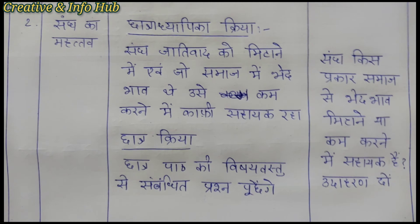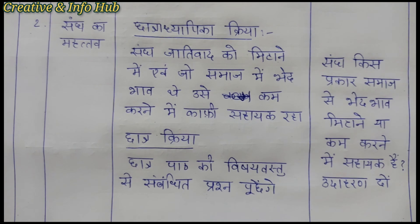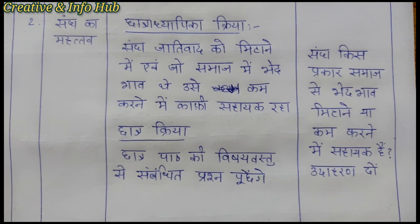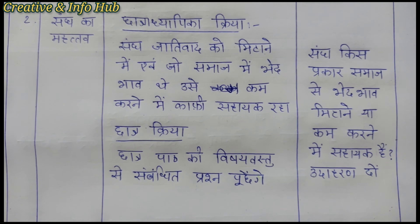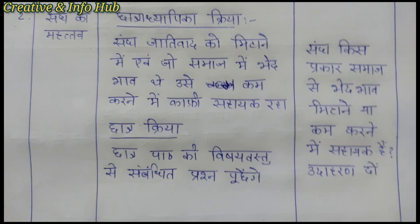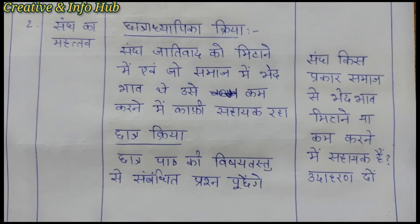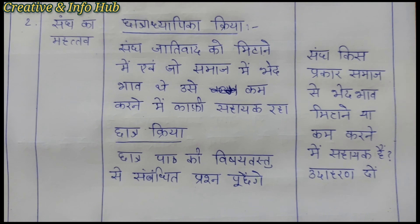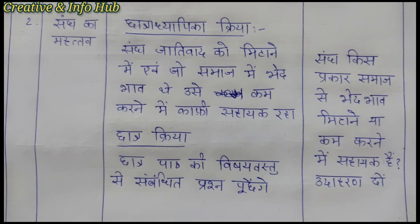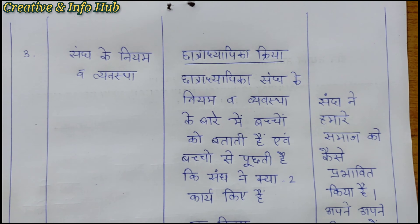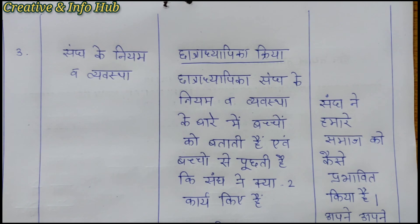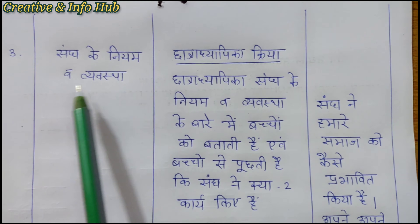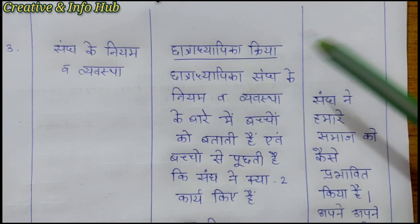Now the actual class begins — this section is headed Prastudhikaran (Presentation). Here we create a neat and clean table with columns: Krama Sankhya (serial number), Section Bindu (teaching point), and Kakshya Kaksh Kriya Kalaap (classroom activities). Within the classroom activities column, we include both Chhatra Adhyaapika Kriya (teacher's activity) and Chhatra Kriya (student's activity) — both are included together.